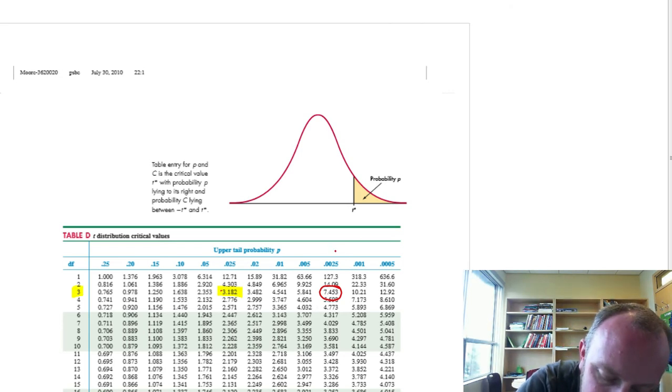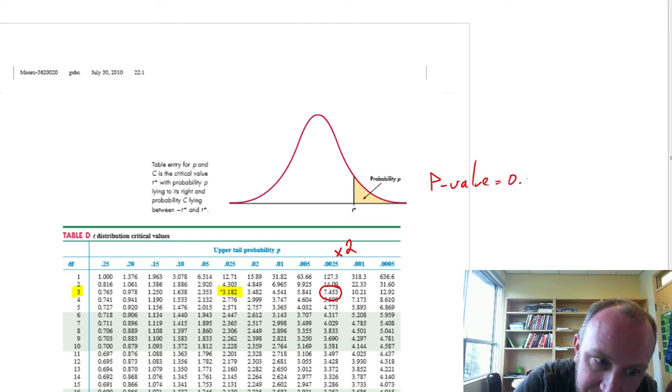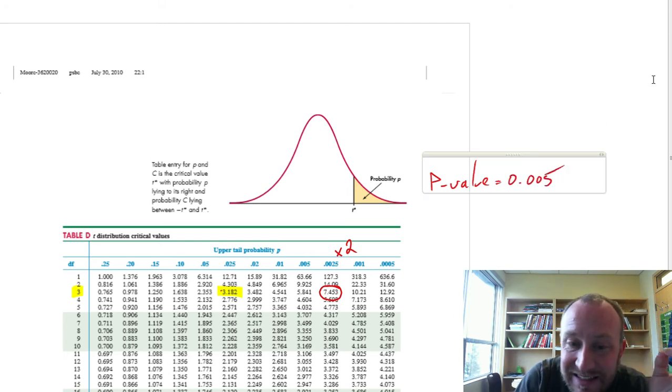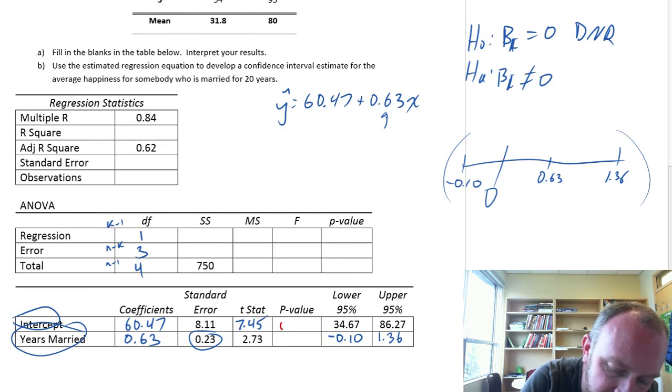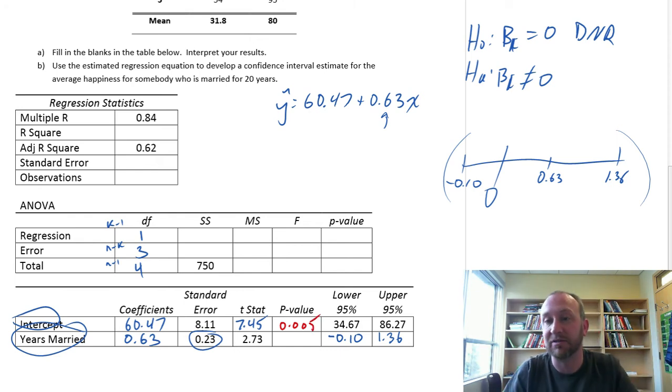So 7.45 gives us a p-value of approximately 0.0025. That's a lie. This is a two-tail test. We have to double that. So this is going to give us a p-value somewhat closer to 0.005. Still, very small p-value. So roughly 0.005.